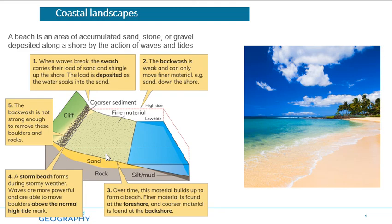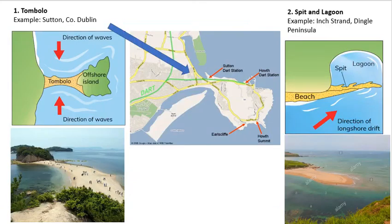It's important that we know in detail how a beach is formed — that's our feature of coastal deposition, just as it's important to know our feature of coastal erosion from yesterday, which is the cliff. We also need to be able to identify some other coastal landscapes of deposition — things that were formed because the water dropped or deposited sand and shingle.